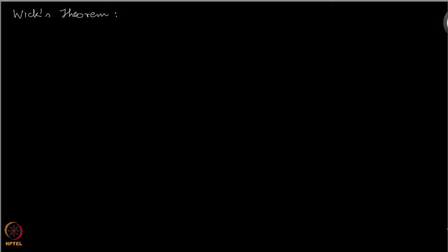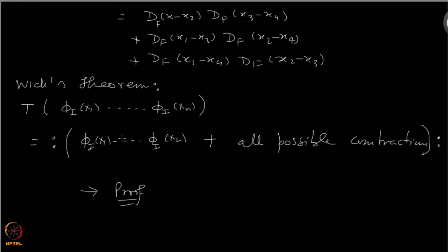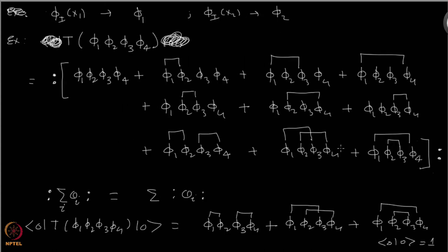Let us prove Wick's theorem. As a reminder from last time: if you take a time-ordered product of fields φ(x₁) to φ(xₙ), so you have n fields here, then the time-ordered product can be written as a normal-ordered product of those fields φ(x₁) to φ(xₙ), plus a sum over all possible contractions, just as we saw for the case of four fields.